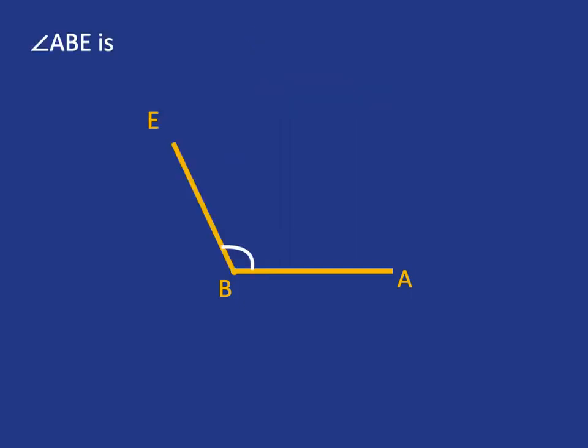Now if we move to angle ABE, it's moved beyond 90 degrees, but it's still smaller than 180, which would be a straight line. That kind of angle is called an obtuse angle.